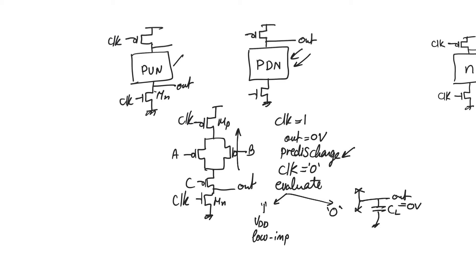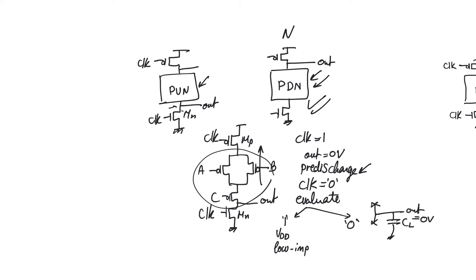This alternative uses a pull-up network instead of a pull-down network, so the output is taken at the bottom instead of at the top. It pre-discharges during the 1 phase of the clock, and produces a low impedance VDD but a high impedance 0 volt during evaluate. In general, N stages — those designed using pull-down networks — are preferred over P stages — those designed using pull-up networks — because the PMOSs in a pull-up network have to be bigger to provide the same resistance during evaluate, causing more loading on the previous stage and more self-loading.